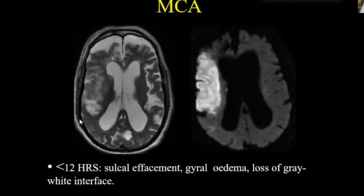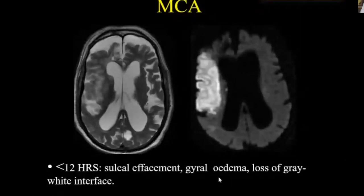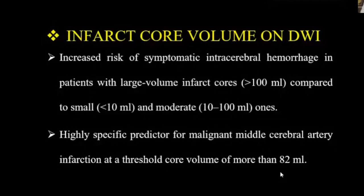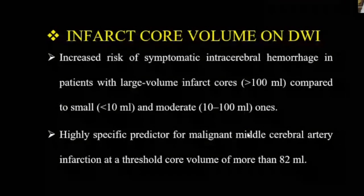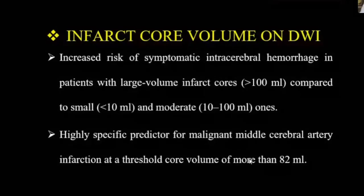As infarct moves from hyperacute to acute stage, the diffusion abnormality gets more intense and brighter. On FLAIR and T2, it will be seen as a wedge-shaped hyperintensity, with sulcal effacement, gyral edema, and loss of gray-white matter differentiation. For volume measurement, multiply the anterior-posterior, lateral, and superior-inferior dimensions divided by 2. When infarct volume is less than 10 ml, outcome is very good; moderate-sized infarcts have lesser outcomes; and large volume infarcts greater than 100 ml have worse outcomes with higher chances of hemorrhage. The cutoff to differentiate malignant from benign MCA infarct is a core volume of 82 ml — anything less than 82 ml can be treated aggressively.